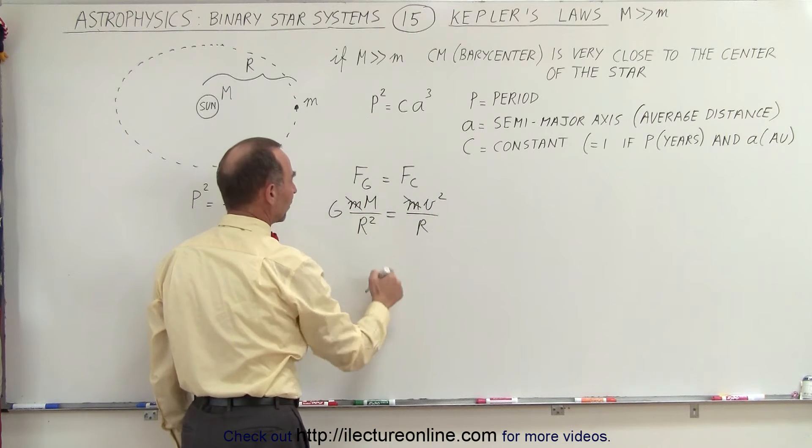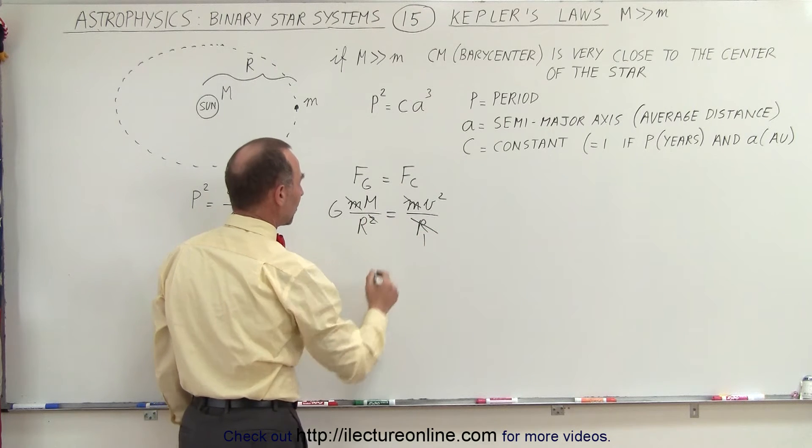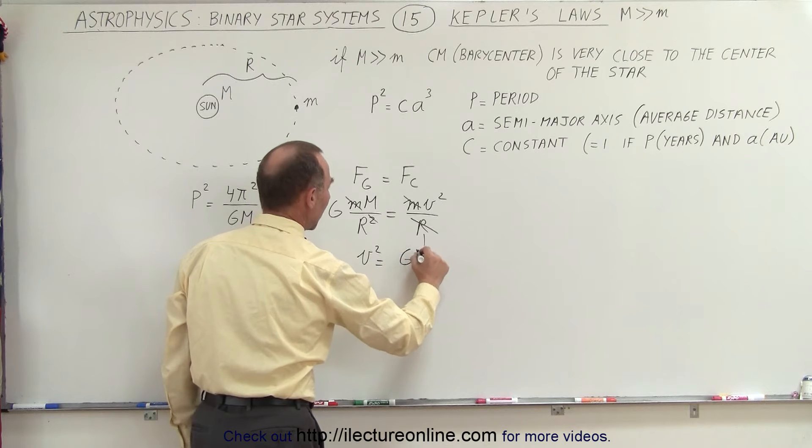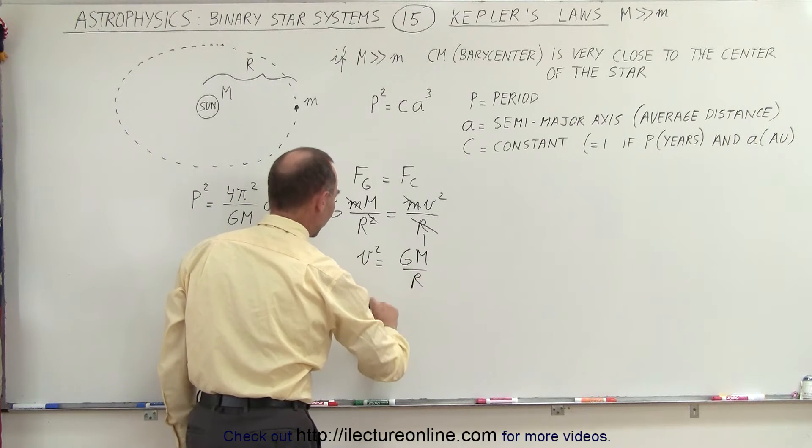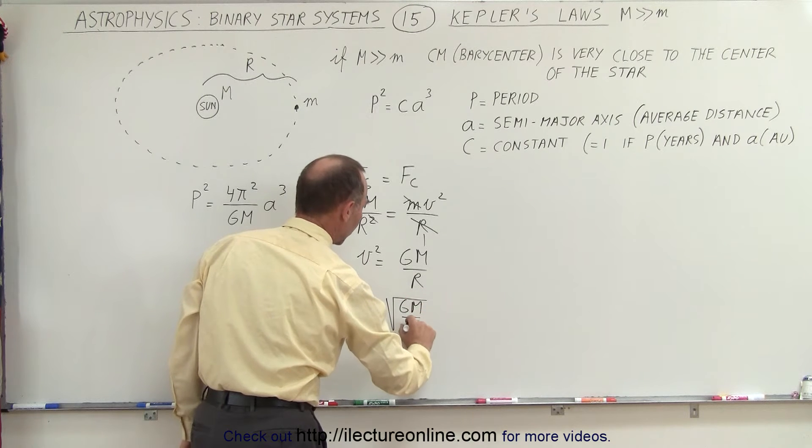First, the mass of the planet cancels out, and then one of the r's here cancels out. So that means that we have v² = GM/r, or v = √(GM/r).